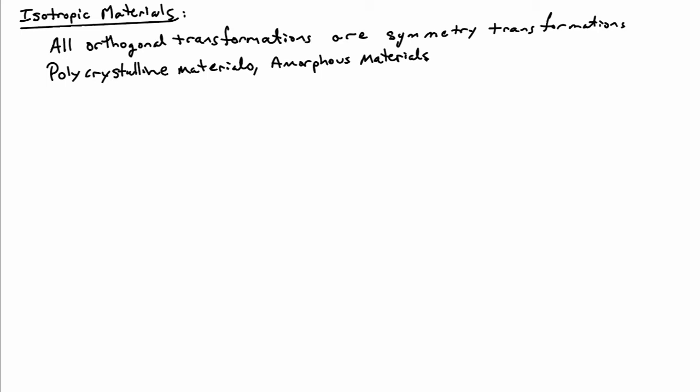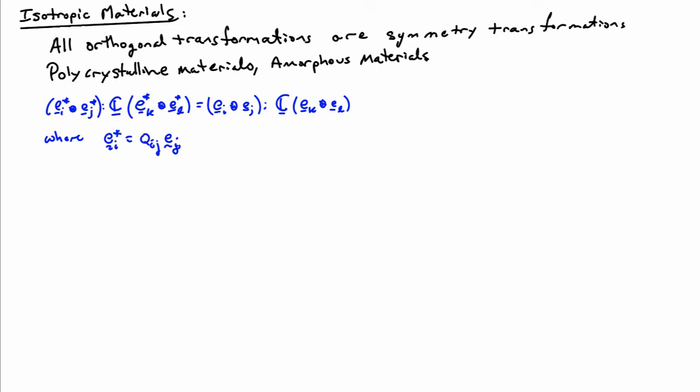Like with monoclinic, orthotropic, and cubic materials, I'd like to look at the implications that a material having isotropic symmetry will have with respect to the linear elastic constants. So let's recall that when you have a symmetry transformation, the components of the elastic stiffness moduli with respect to one basis — a star basis — is going to be equal to the components in the unstar basis, where the relationship between the two bases is through the components of a symmetry transformation. Every material has a symmetry transformation.